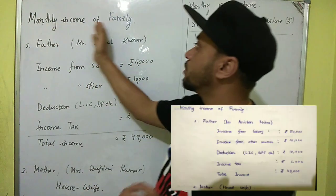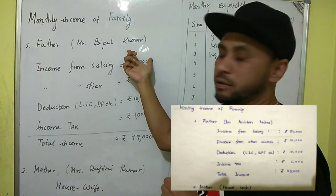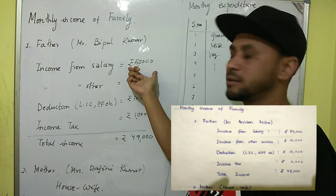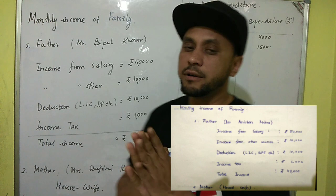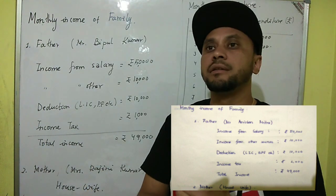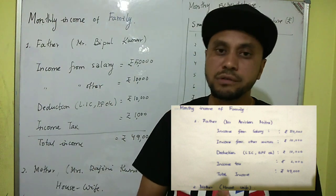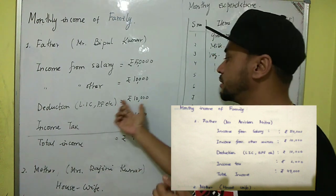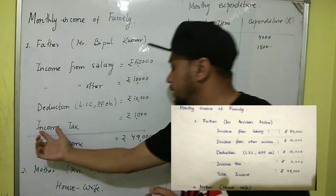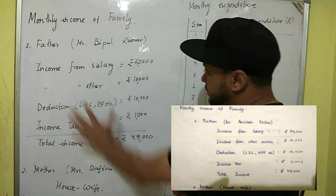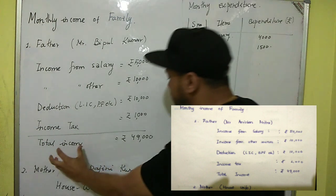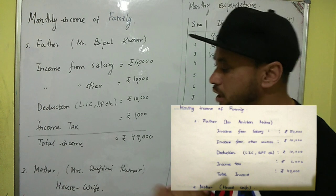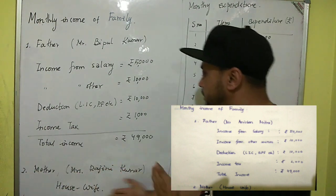Under Monthly Income, write the father's name, then Income from Salary — for example, fifty thousand rupees. Then Income from Other Sources — for example, if your father is a teacher, he may earn from tuitions or coaching classes, so write ten thousand rupees. Then Deductions — LIC, PF: ten thousand rupees; Income Tax: one thousand rupees. Total income is sixty thousand, minus deductions of eleven thousand, giving a net income of forty-nine thousand rupees. For mother, just write her name and 'House.'